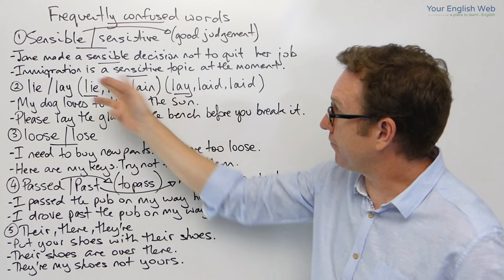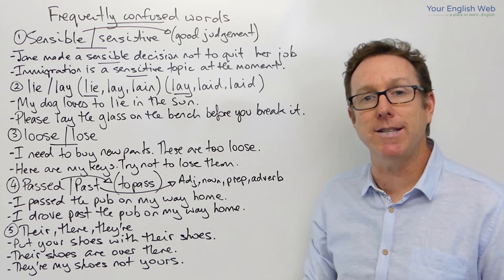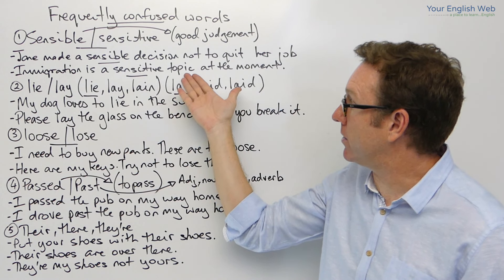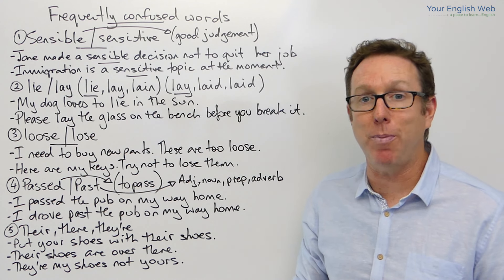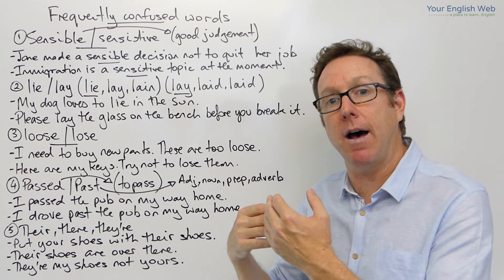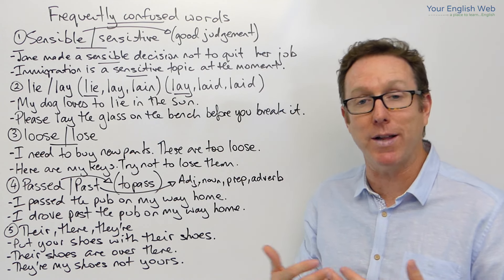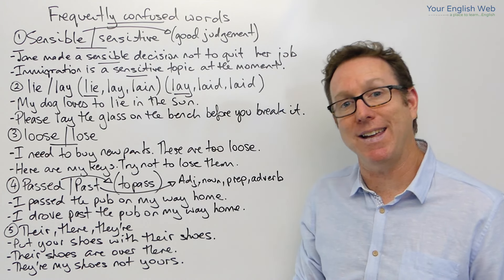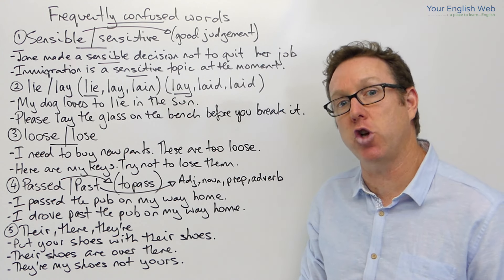And sensitive — for example, immigration is a sensitive topic at the moment. Sensitive means easily upset. And if we put it in the context of a topic, immigration is a sensitive topic, meaning that it needs to be treated carefully in order not to upset people because a lot of people have mixed emotions or they react quite strongly when it comes to the topic of immigration, especially in some countries. In Europe at the moment, immigration is a sensitive topic.